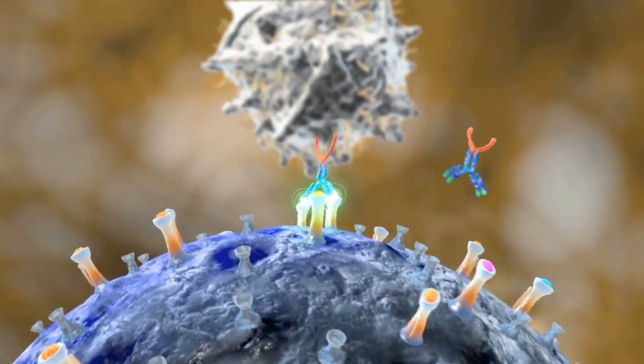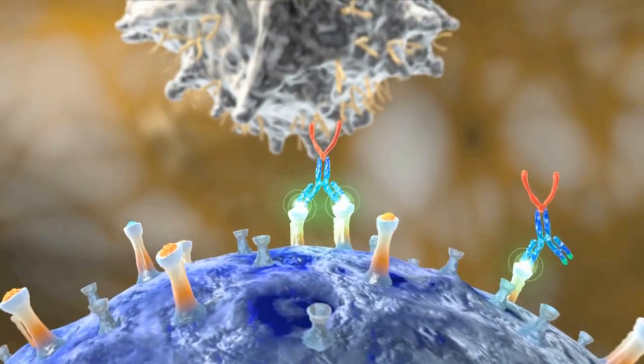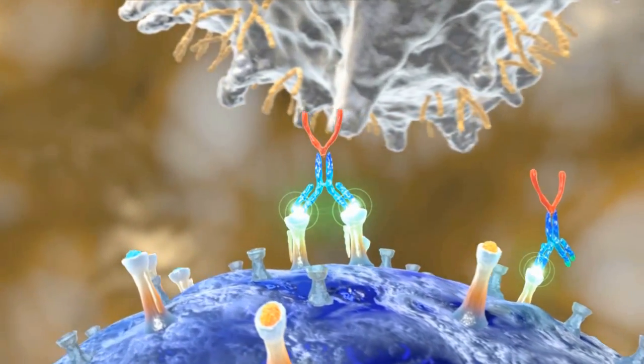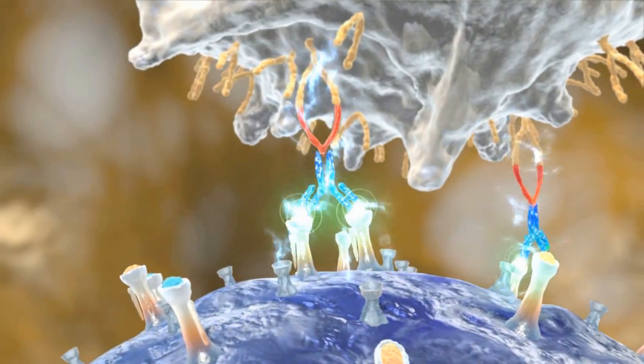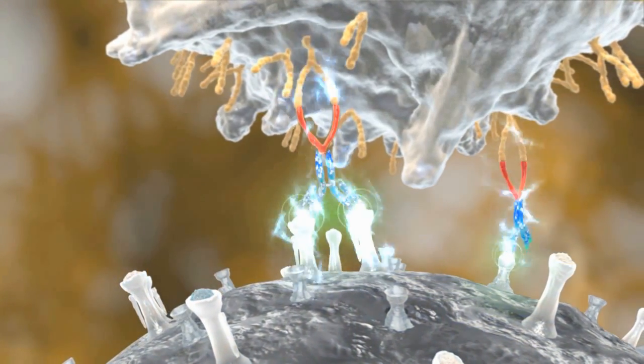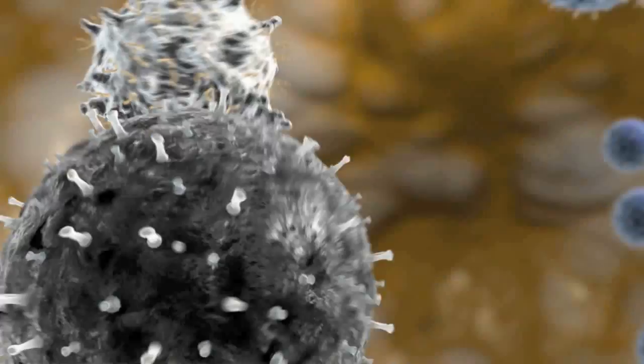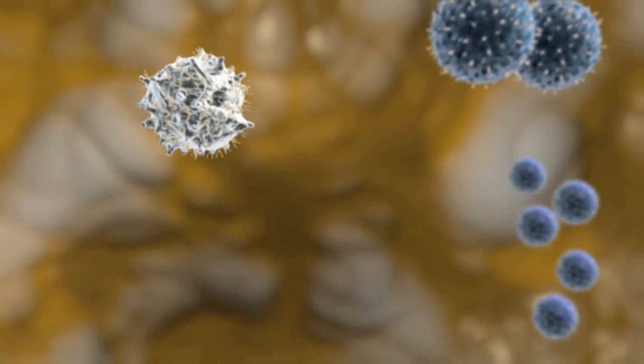Another way is to transform the TCRL antibodies to a bi-specific format. This way, the TCRL will recruit cells from the body's immune system to the site of the tumor, destroying the cancer cells.